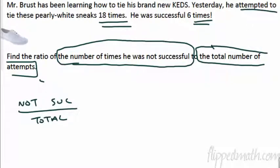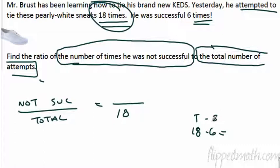So let's go back up and see if we can mark our text here. All right, he attempted to tie these pearly white sneakers 18 times. So that's going to be the total. I can put that right here. And he was successful six times, but they want to know not successful. So if we do 18 minus 6, that'll tell us this is total. This is successful. This will equal not successful. That's a 12.